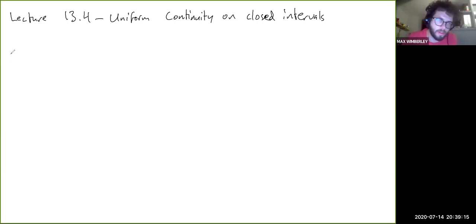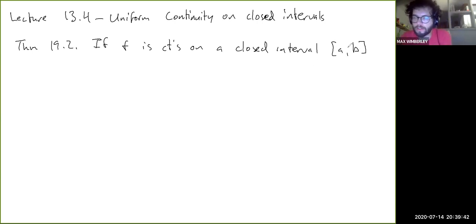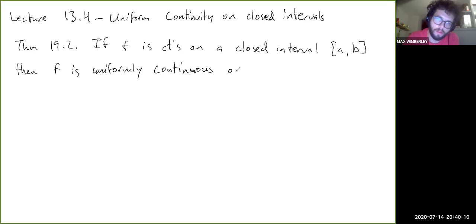Let me state the theorem first. This is theorem 19.2. If f is continuous on a closed interval AB, and remember that if we're talking about a closed interval, it's implicit that A and B have to be finite numbers, because we never really consider an infinite endpoint for an interval to be closed. Then f is uniformly continuous on AB.